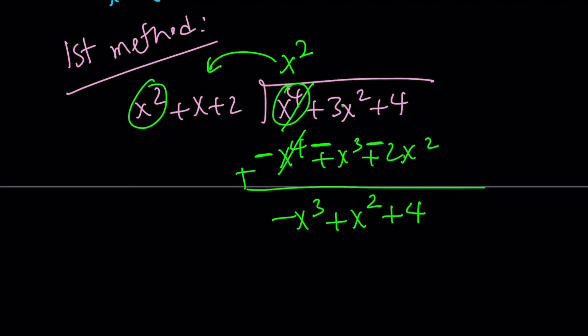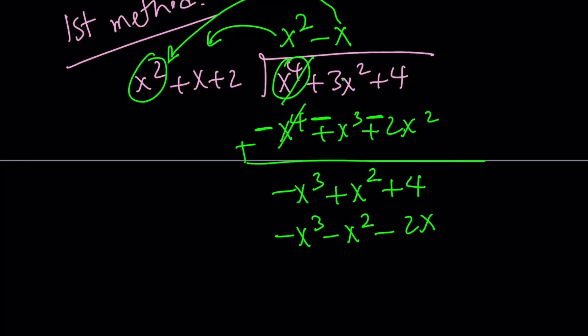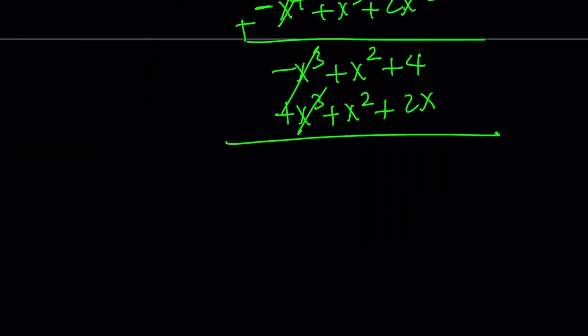Now, what are we going to do next? Next, we're going to divide x squared into negative x cubed. And that goes negative x times. If you distribute or multiply negative x by this, you're going to get the following. Negative x cubed minus x squared minus 2x. And then what we have to do next is negate everything and add. And we're going to get the following. x cubed, of course, needs to cancel out. x squared plus x squared is 2x squared. And then we have plus 2x plus 4.